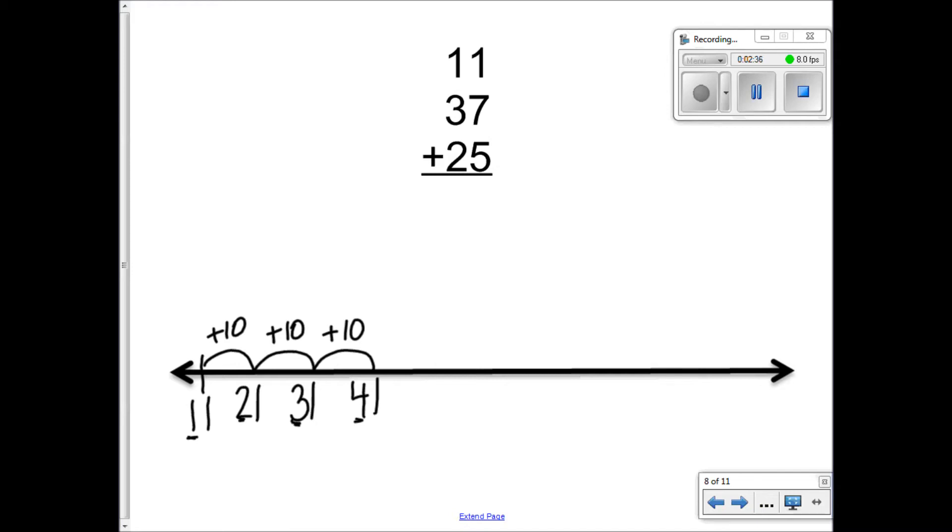So now I need seven ones. So I'm going to start my line where I stopped. Here's my plus seven. So I see I have three tens and seven ones. There's that number, three tens and seven ones.